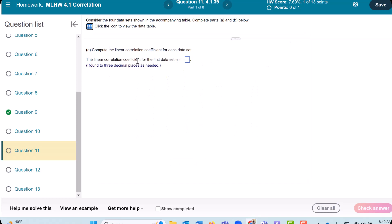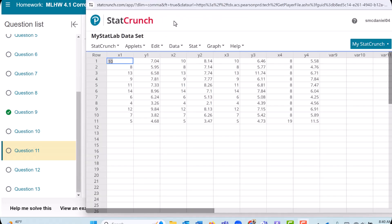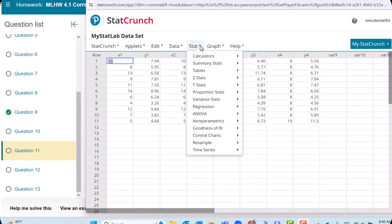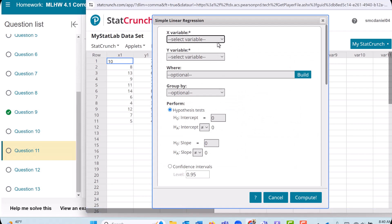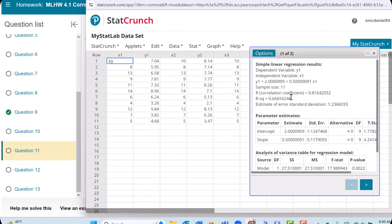So we're trying to find the coefficient R for each of those data sets. Let's do the first one. I'm going to go to Stat and Regression Simple Linear. So the X is in X1, the Y is in Y1, and we'll just take the defaults. And here is our correlation coefficient, 0.816.